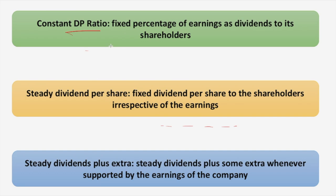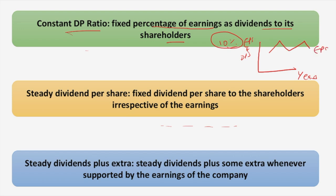The first dividend policy is the constant dividend payout ratio: a firm distributes a fixed percentage of earnings as dividend. For example, if a company pays 10% of earnings as dividend, fluctuations in earnings cause fluctuations in dividends — the EPS and DPS move in tandem on a graph. The second is steady dividend per share: a fixed dividend per share is given irrespective of earnings. The firm must set the dividend at a reasonable level, and the DPS once decided is maintained over several years.